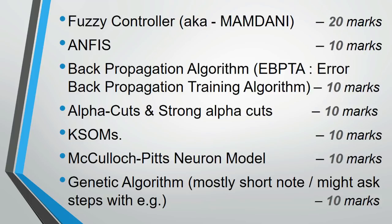Next we go to the Genetic Algorithm. Sometimes they ask short notes, and sometimes they ask you to explain the steps within the genetic algorithm with an example. The Genetic Algorithm pseudocode is given in our notes. You have to write the steps, then explain the process. If it is a short note, you need content, and you can also write briefly about crossover, selection, mutation, and replacement at the end.